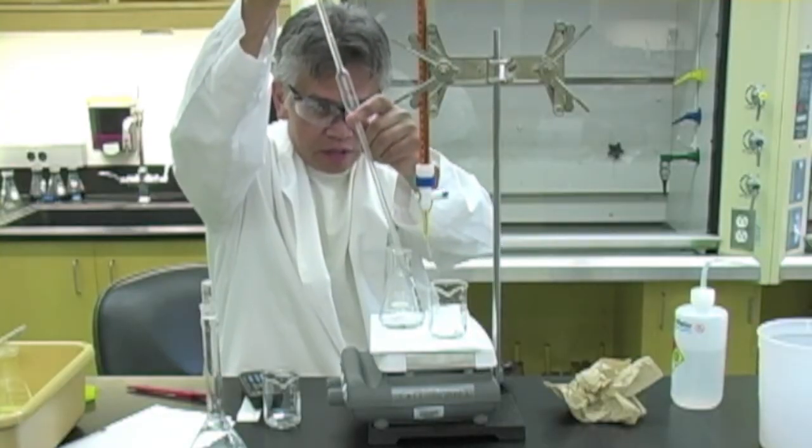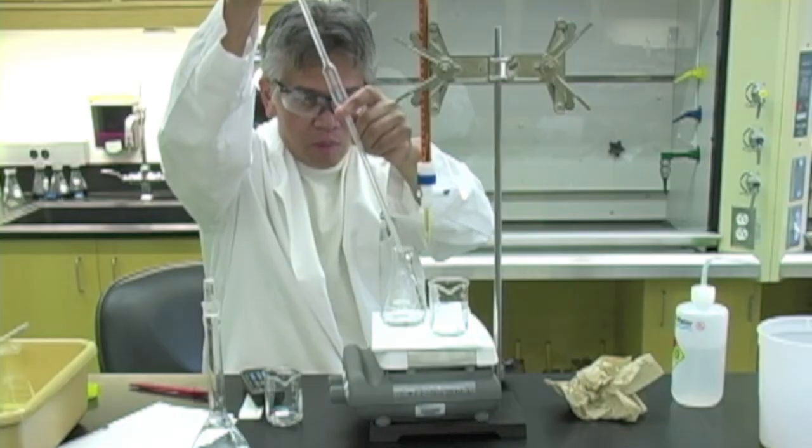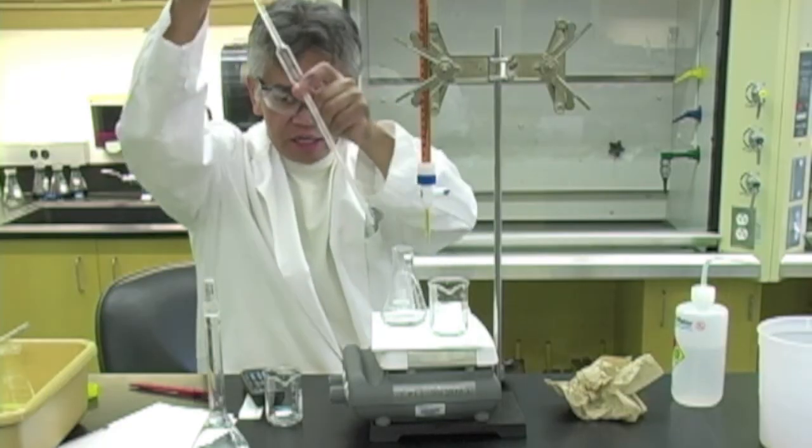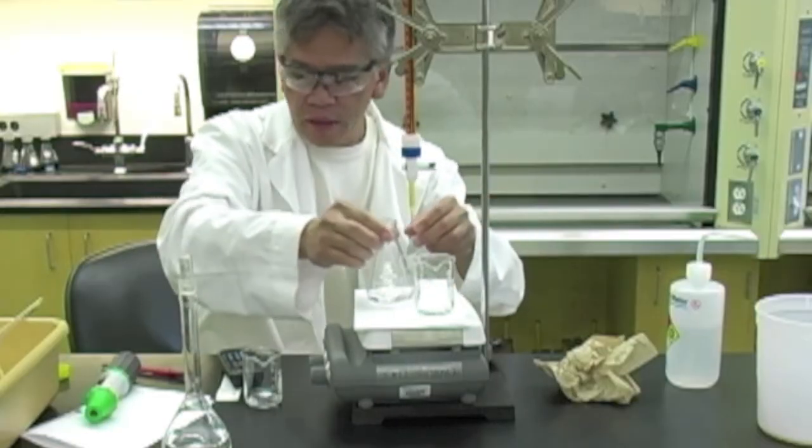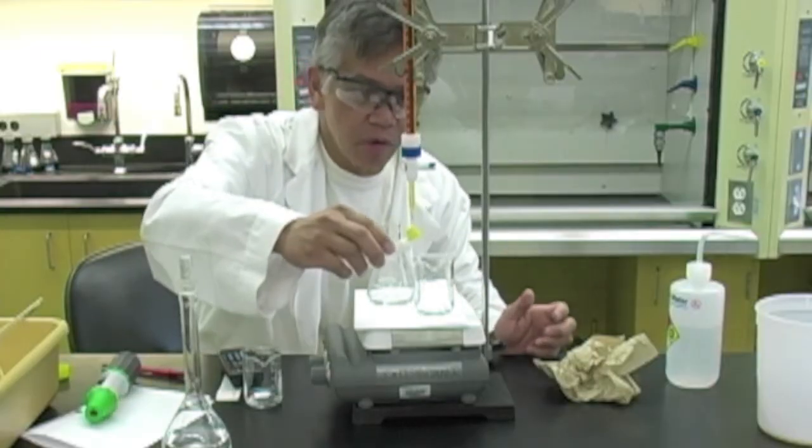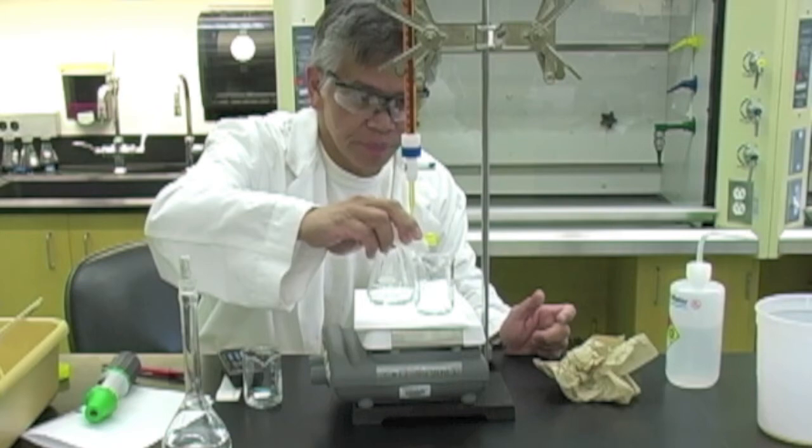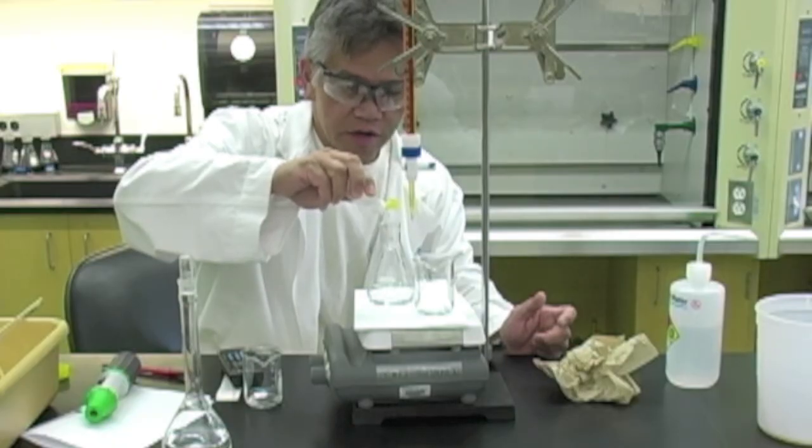Recall that these are calibrated to deliver. So you just want to make sure that all the volume drains and touch the inside of your Erlenmeyer flask. Don't forget to add your starch indicator, otherwise you will never see the endpoint. I'm going to add 10 drops of starch indicator to my unknown.